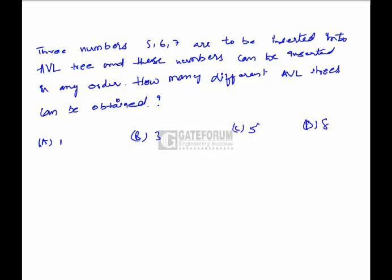In this question, three numbers are given and we have to find the number of different AVL trees that can be formed by those numbers such that they can be inserted in any order. To solve this problem we need to know what an AVL tree is. An AVL tree is nothing but a binary search tree in which the balance factor of each and every node is plus or minus 1, where balance factor is the height of the left subtree minus the height of the right subtree.